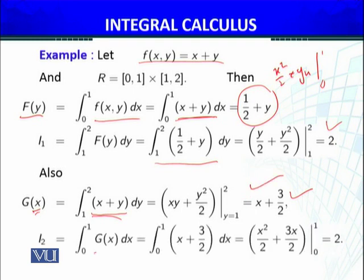Now I₂, the iterated integral I will calculate, ∫[0 to 1] G(x) dx. I will evaluate this. This is in fact two.